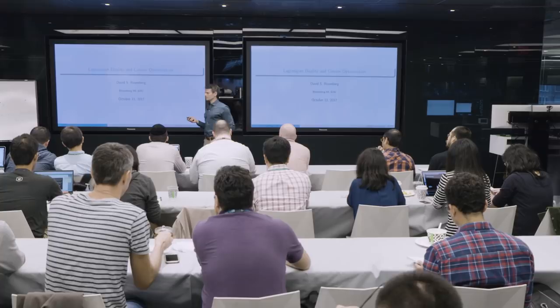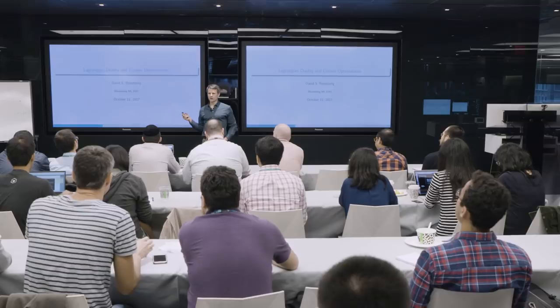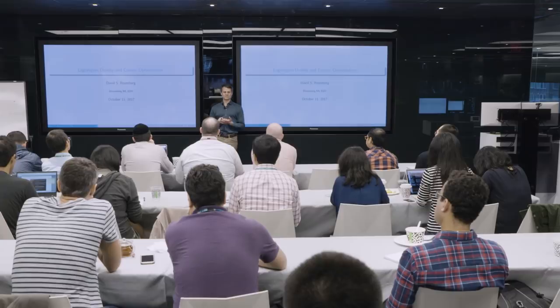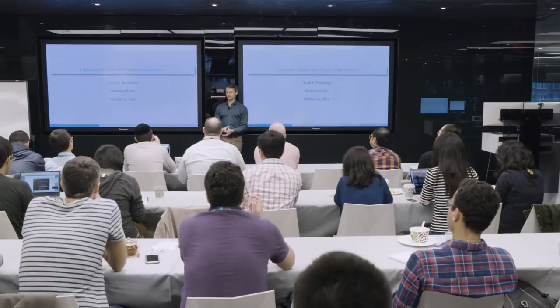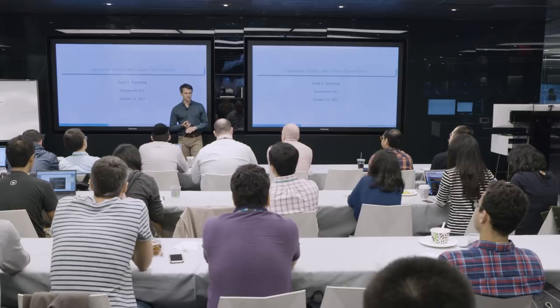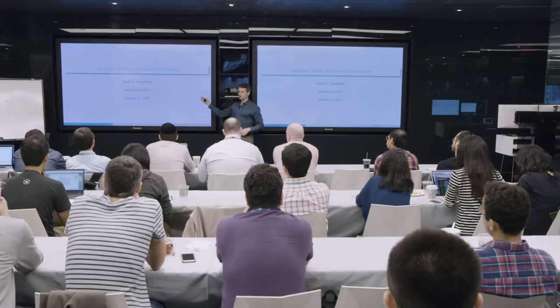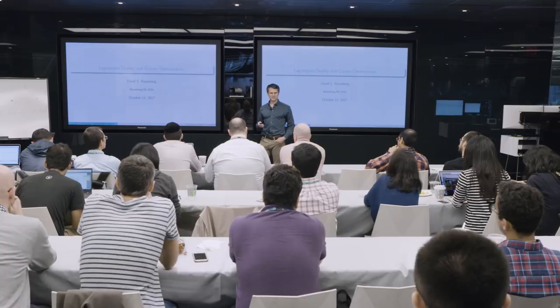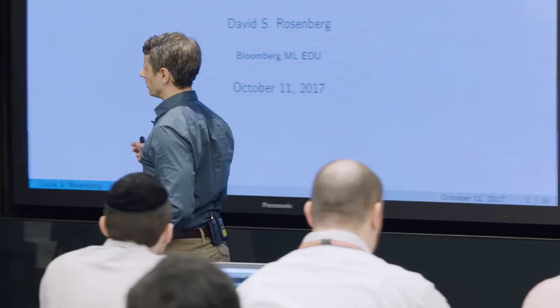Traditionally, Lagrangian duality was taught paired with support vector machines — it's just kind of them coming at the same time. And there's another reason they were paired together, which is it gave a very nice lead into what we're talking about next week: kernel methods and kernelization. But it turns out there's a much lighter and more elegant way to get there than going through Lagrangian duality. So that's no longer one of the reasons for doing this, but there's still enough other reasons that I think it's worth going through.